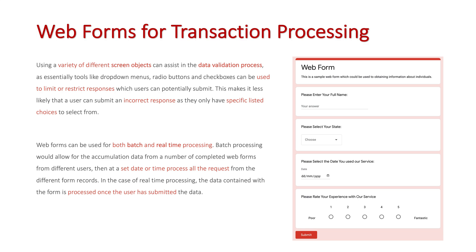Forms can be used for both batch and real-time systems. In a batch system, lots of users can enter a whole variety of different records which will all get processed at a later date. In a real-time system, as soon as an individual enters their data into the form it gets processed immediately — such as signing up for a website straight away, where their account gets made and they can start using the service immediately.